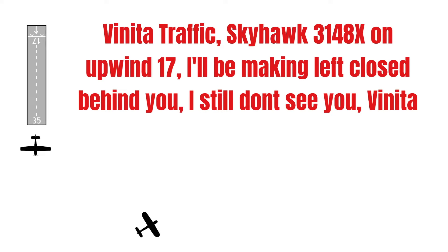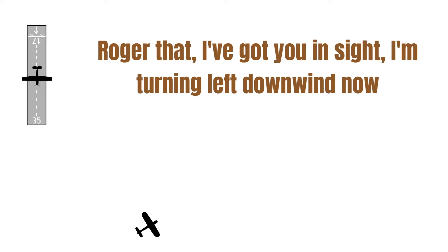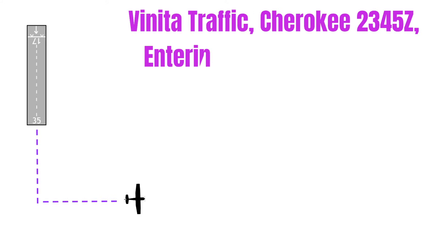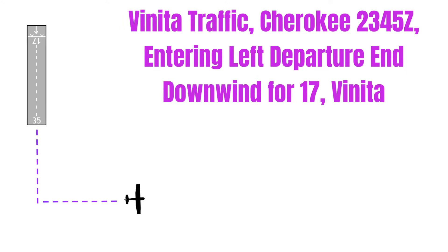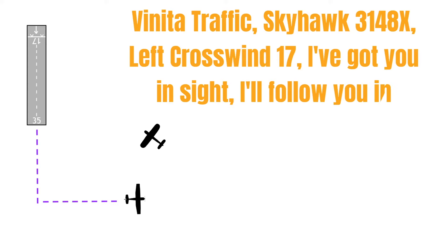Nine times out of ten, if you make a radio call like this, the other pilot will respond: 'Roger that, I've got you in sight, I'm turning left downwind.' There are a lot of different situations you might run into in the pattern, so it'd be impossible to cover every scenario. Worst case, just speak plain English. Now, let's say I'm on left crosswind for runway 17 and hear someone entering left downwind for 17. If I see this guy, my call might sound like: 'Veneta traffic, Skyhawk 3148 X-ray, left crosswind 17, I've got you in sight, I'll follow you in.'